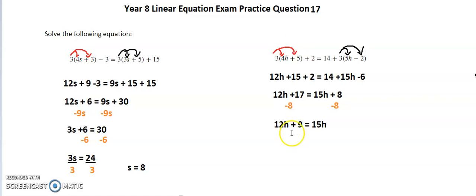I'm wanting to get my variable onto one side, so I'll take 12h from both sides. If I take 12h from both sides, that leaves me with 9 is equal to 3h.